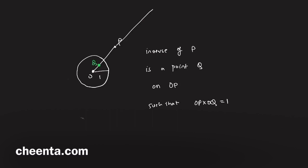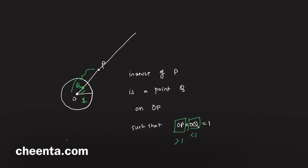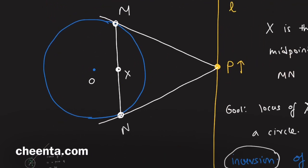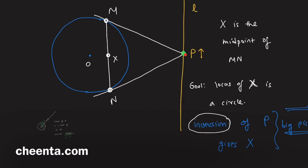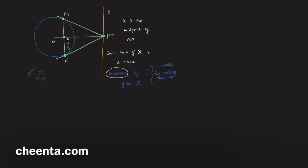Since OP is greater than 1 (P is outside the circle), OQ will be less than 1, meaning Q is inside the circle. This construction — drawing two tangents from P, joining the points of tangency, and taking the midpoint — gives us the inverse of P.